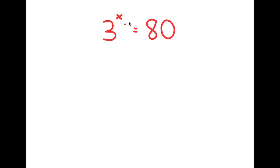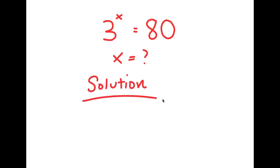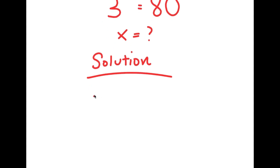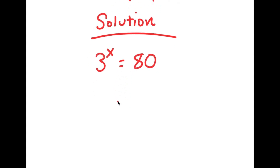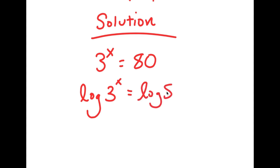In this problem, I have 3 to the power of x is equal to 80. I want to find the value of x here. So for my solution, I first start with 3 to the power of x is equal to 80, and now I'm going to take the log on both sides. So I get log 3 to the power of x is equal to log 80.